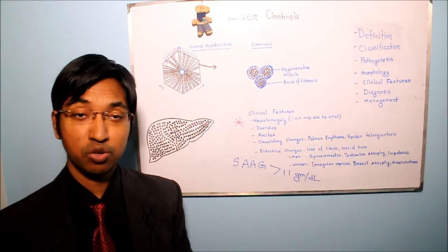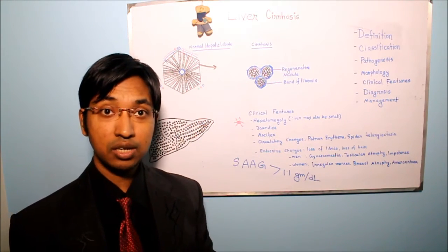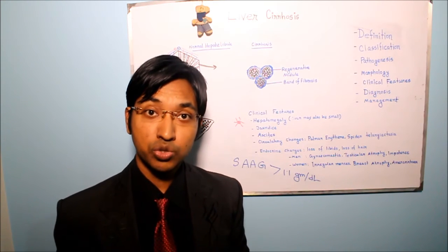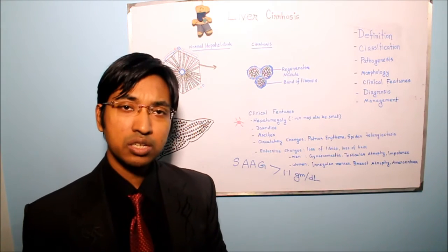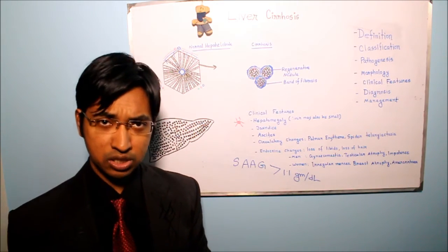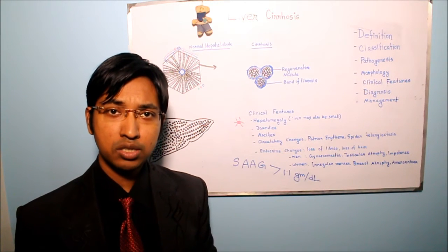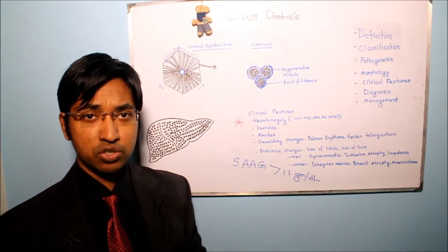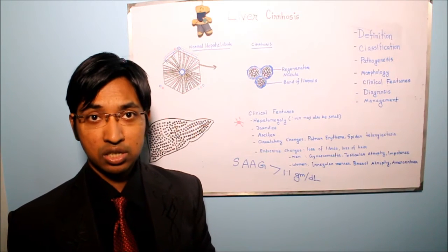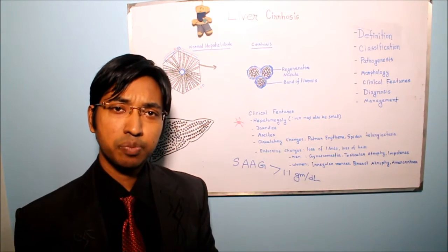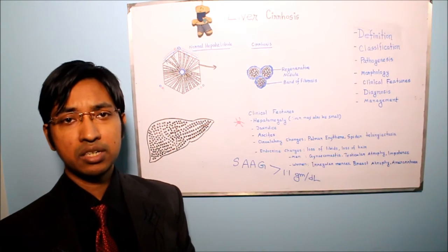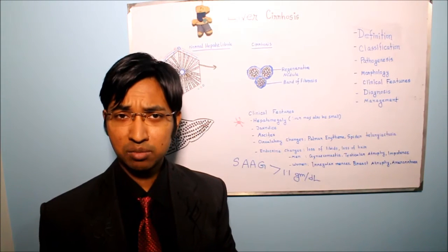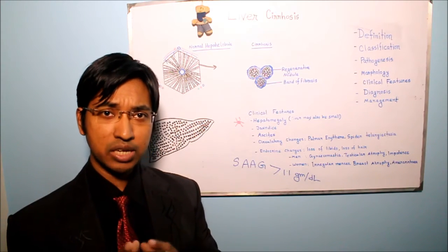These are called caput medusae — Latin for head of Medusa — because of their similarity in appearance to the head of Medusa, which contained venomous snakes instead of hair. The third clinical manifestation of portal hypertension is congestive splenomegaly. Patients of liver cirrhosis may develop long-term congestion in the spleen, resulting in enlargement of the spleen. Hypersplenism may also develop, and as a result we may see thrombocytopenia and pancytopenia in a patient of liver cirrhosis.